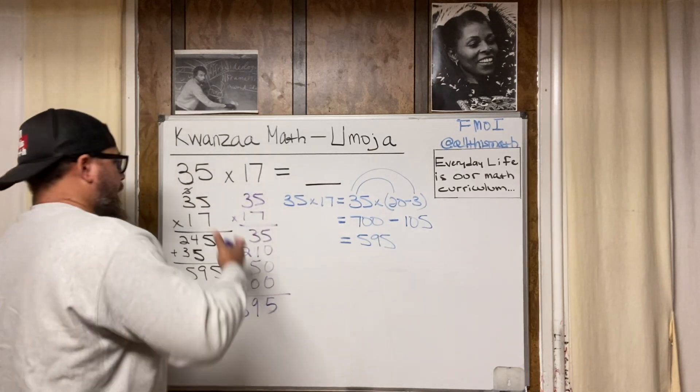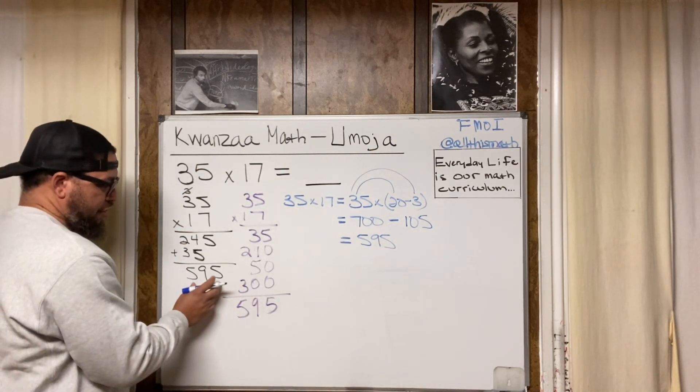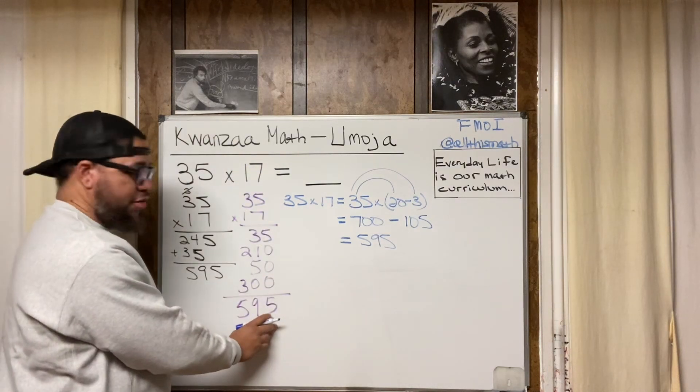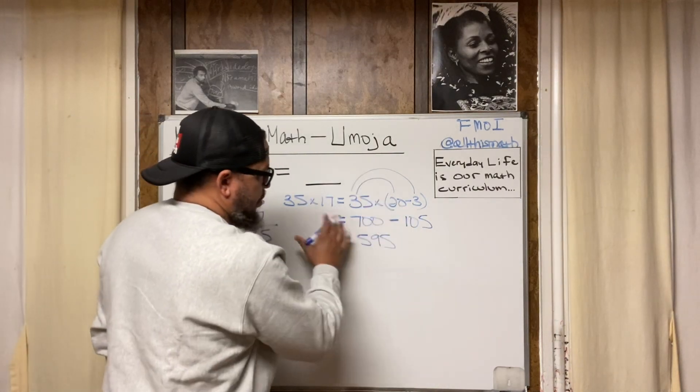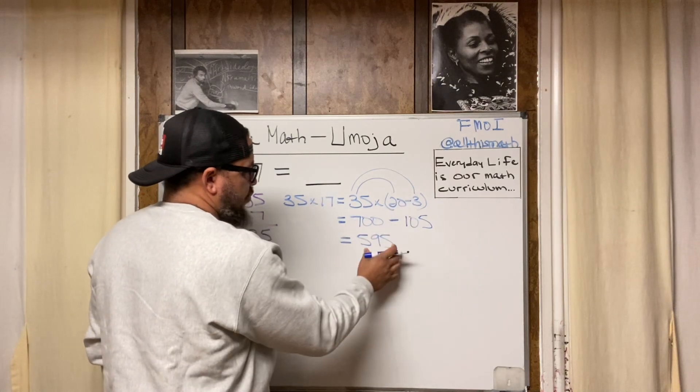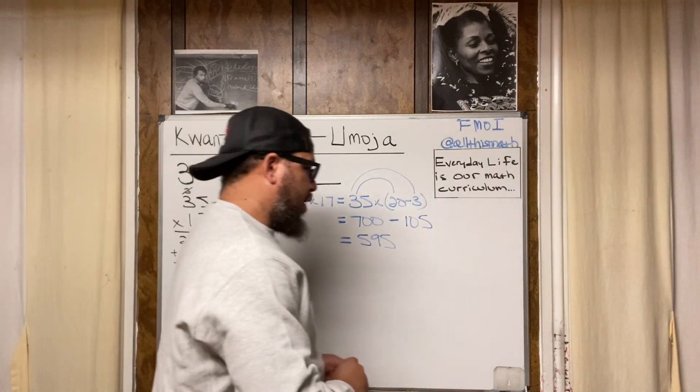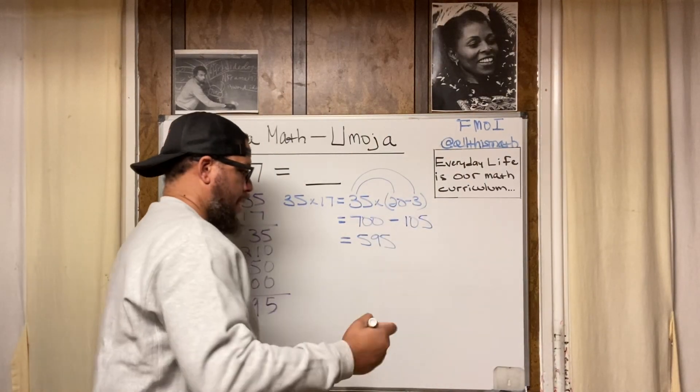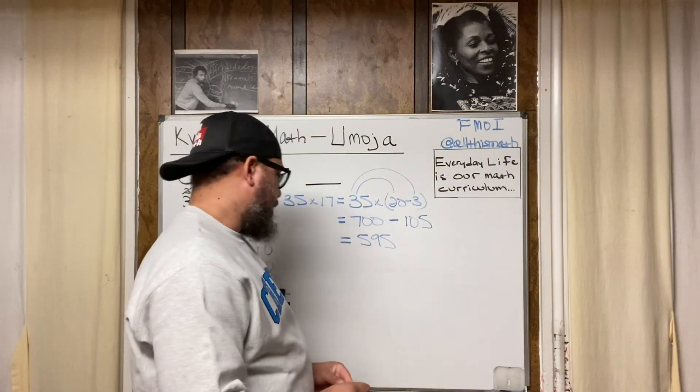Again, look at what I'm doing. I use the traditional algorithm and I got 595 for my product. I use partial products. I got 595 for my product. I use a mental math method using distributive property and I got 595 for my product. I'm getting 595 regardless. Now let's do this one more way. Because I don't want this video to get too long or too crazy.